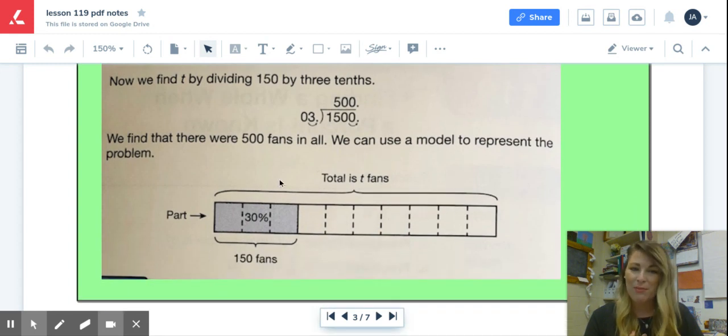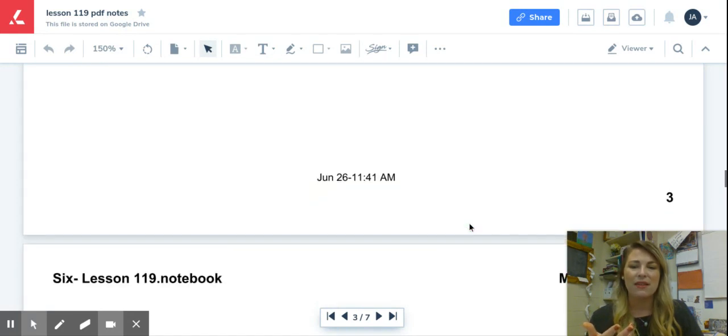For those visual people like me, this is a diagram. This is just how you could break it down into different sections and notice, well, 30%, I could break each of these into 10%. Three of those would represent 30%. That would be 150 fans. If I know that, I can plug in how much goes in each of these sections and I can find out a total number of fans.